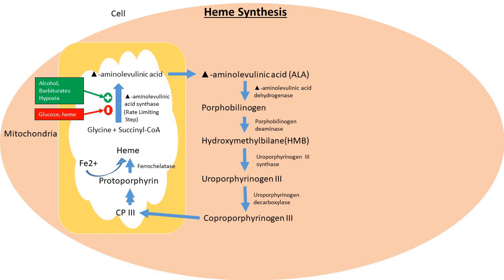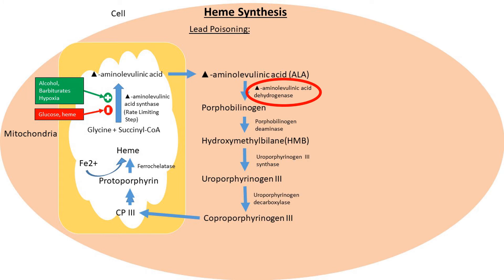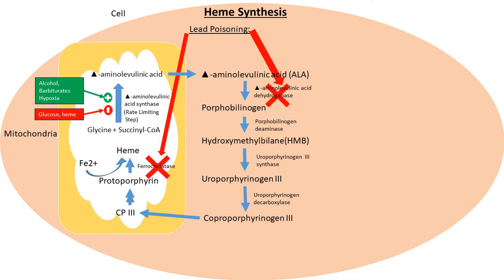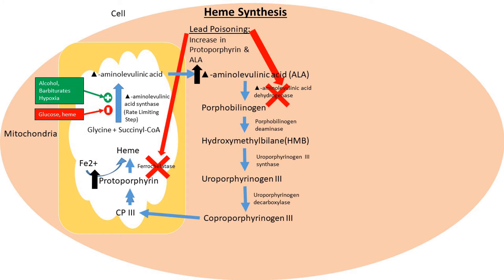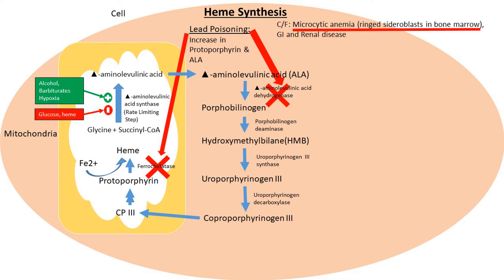Now we'll move to pathologies. Starting with lead poisoning, which can occur due to environmental exposure. When lead is in excess, it inhibits the enzymes delta-aminolevulinic acid dehydrogenase and ferrochelatase. As a result, ALA cannot be converted into porphobilinogen, and protoporphyrin cannot be converted into heme, leading to a buildup of protoporphyrin and aminolevulinic acid. Clinically, patients may present with microcytic anemia.